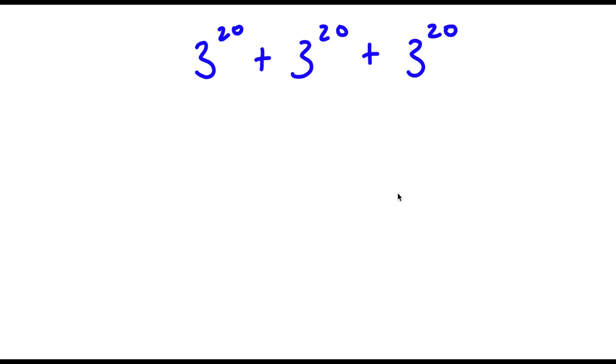Alright, so I have 3 to the power of 20 plus 3 to the power of 20 plus 3 to the power of 20. Now for this problem, I actually have four answer choices.